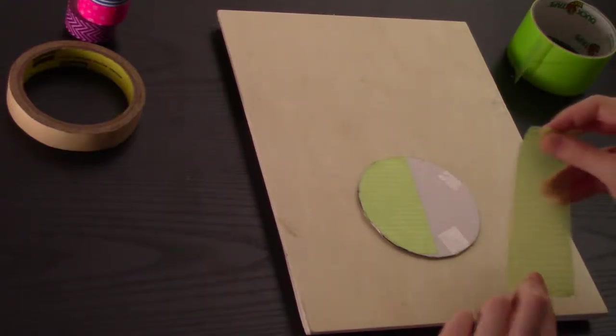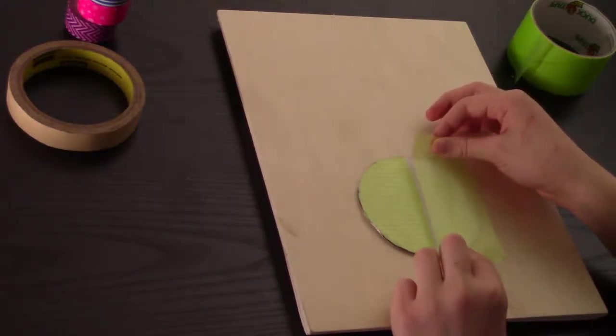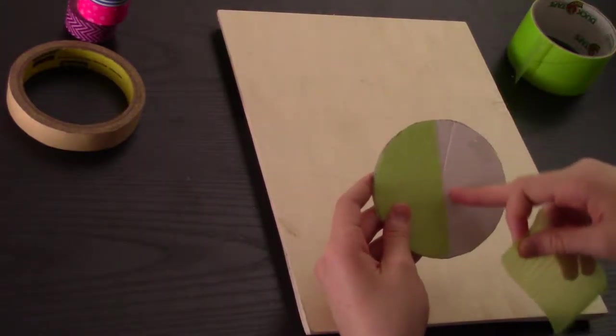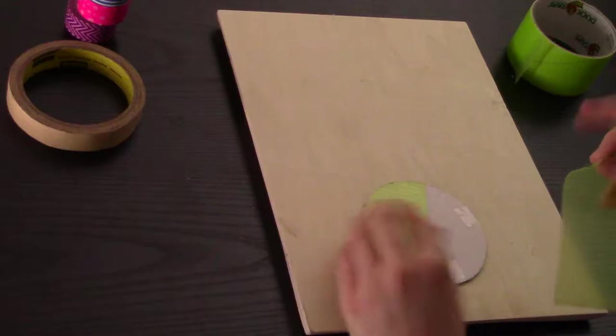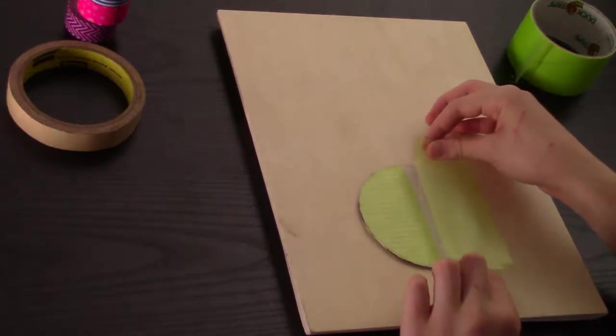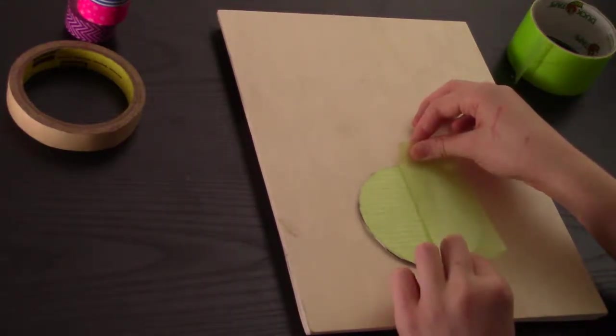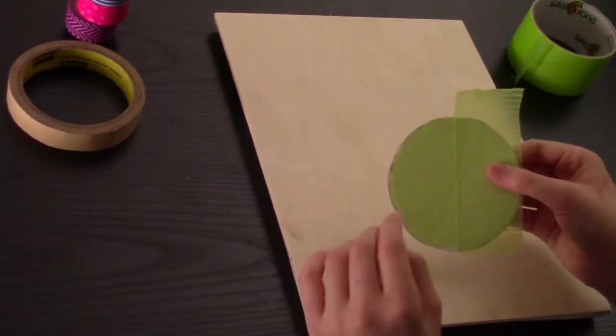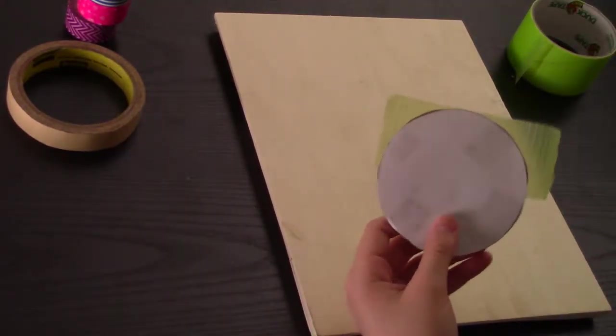So now we have another piece. And what we're going to do is we're going to want to put it just barely over this right here, that piece of duct tape. There we go, perfect. Now we're going to flip it over again, and cut off the excess.